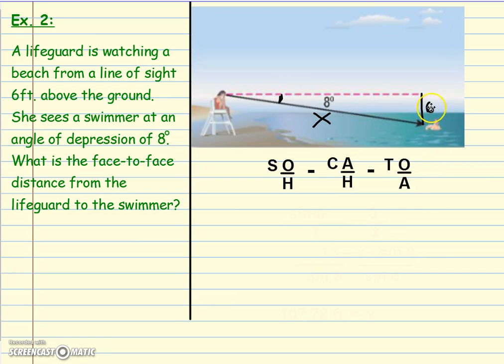I'm going to do the tangent of eight degrees equals six over x. Because x is part of my fraction here, the unknown is right there, so I'm gonna get six equals x times the sine of eight. From here I am gonna need to divide both sides by the sine of eight.